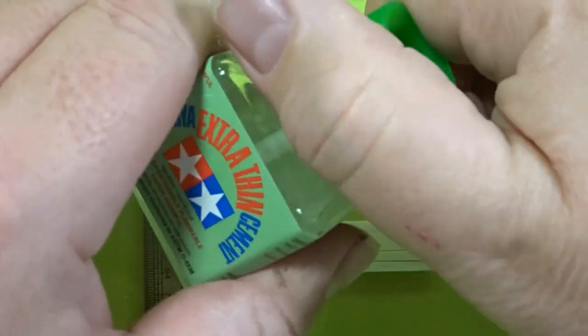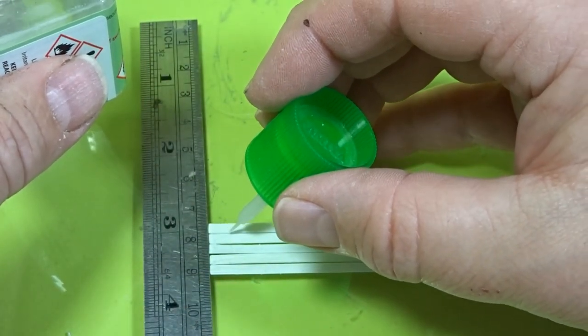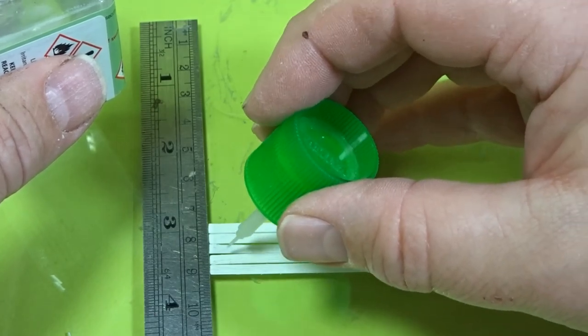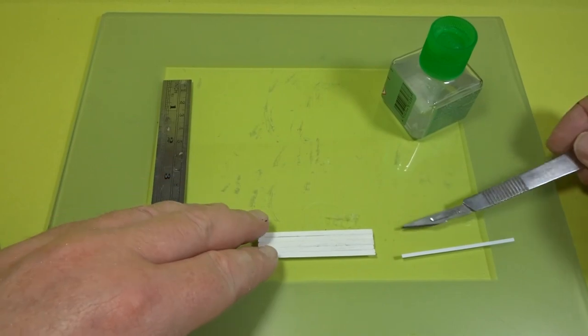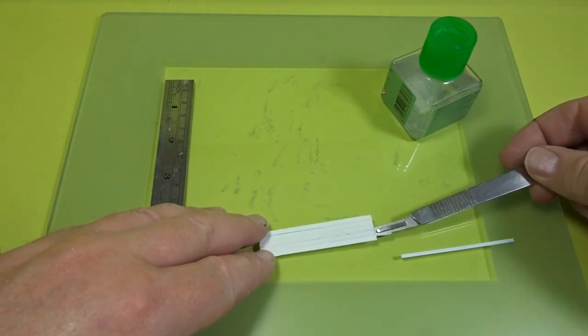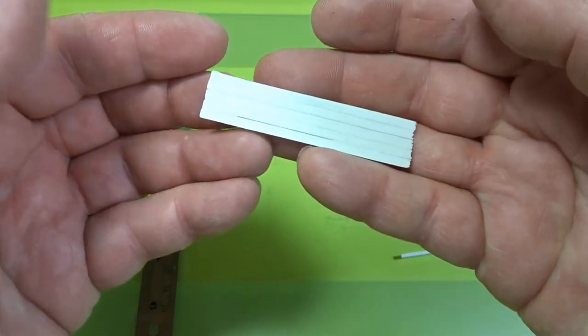And then to add that bit of realism we're going to actually stick the planks together. And I've done this on the glass sheet so as and when the glue dries, as you can see, it's still easy to pick up and it hasn't glued to the surface.